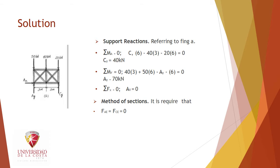Taking the summation of moments at A equal to zero: 6·C_y minus 40 times 3 minus 20 times 6 equals zero, giving C_y equal to 40 kN. Then the summation of moments at C equal to zero: 40 times 3 plus 50 times 6. We also obtain the summation of forces in x equal to zero and in y equal to zero.